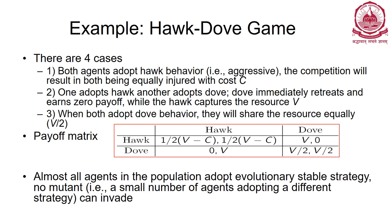Let's formulate the hawk-dove game as a matrix. When a dove and dove interact, they share resources equally: (V/2, V/2). When a hawk and dove interact, the hawk gets all food and the dove gets nothing: (V, 0) or (0, V). When a hawk and hawk interact, they fight and get injured at cost C, so each gets (V - C)/2.